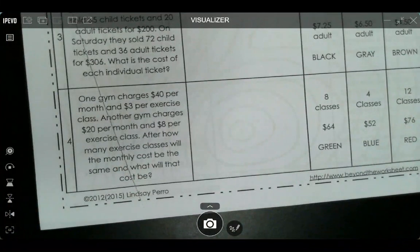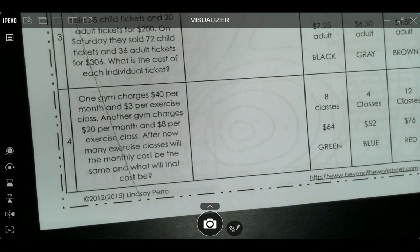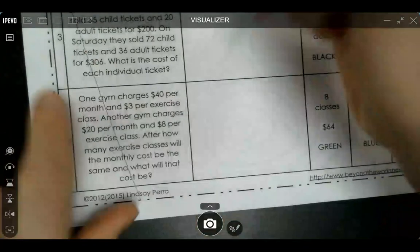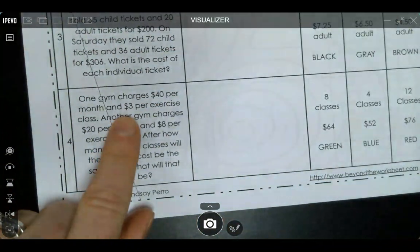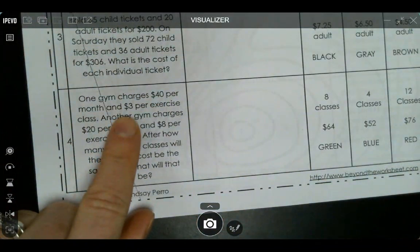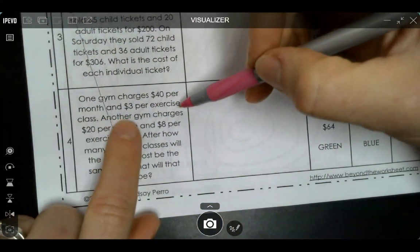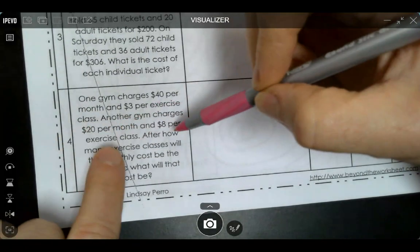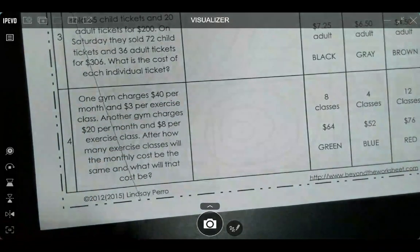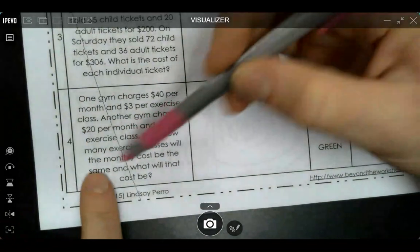So let's look at it. One gym charges $40 a month and $3 per exercise class. Another gym charges $20 per month and $8 per exercise class. After how many exercise classes will the monthly cost be the same and what will that cost be? What's confusing about this is that they have 'per' twice in each of the sentences. So it's like $40 per month and $3 per exercise class, $20 per month and $8 per exercise class.